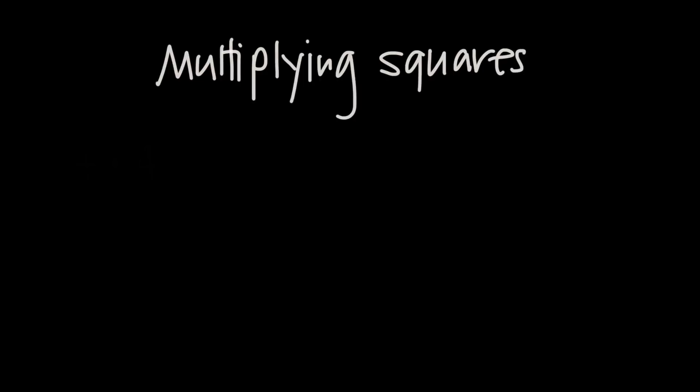When it comes to multiplying squares together, multiplying small numbers like 4 times 4 or 8 times 8 is pretty easy, and in fact we've probably got most of those values memorized.